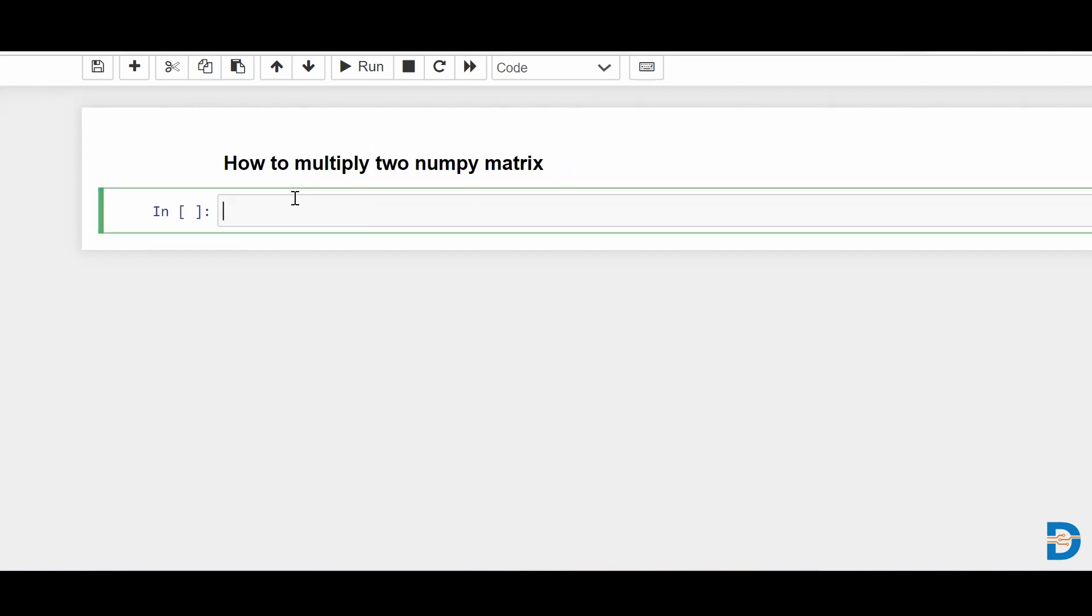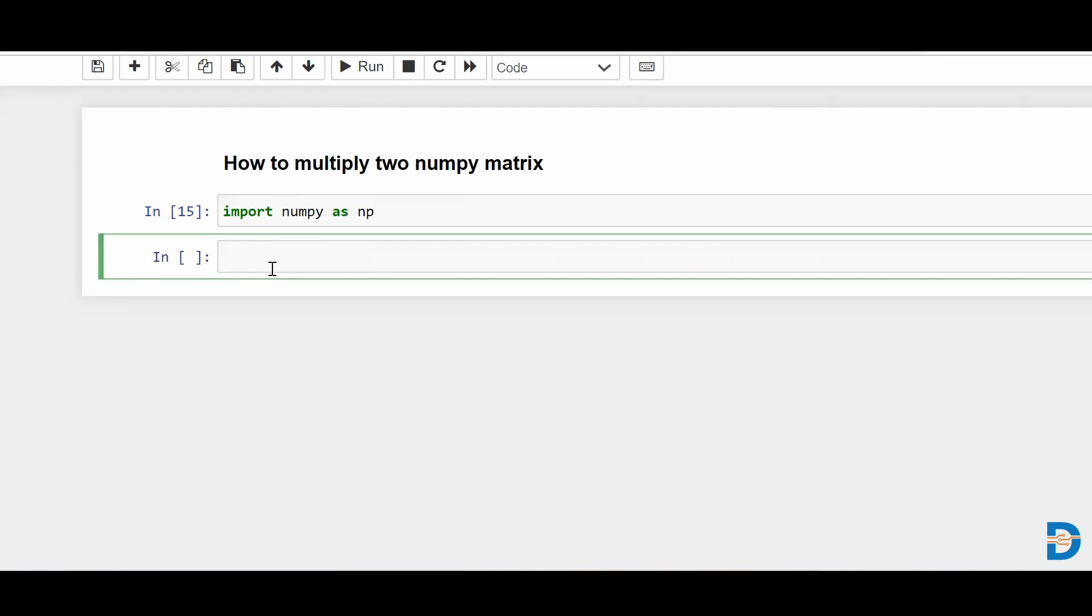So for that, I'll just import my NumPy library. I'll say import numpy as np and I'll create two NumPy matrices. So I'll say A equals to np.array and inside of it, I'll just randomly create something.